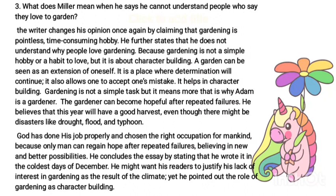Gardening is not a simple task but it means more — that is why Adam is a gardener. The gardener can become hopeful after repeated failures. He believes that this year will have a good harvest even though there might be disasters like drought and flood. God has done his job properly and chosen the right occupation for mankind, because only man can regain hope after repeated failures and believe in new and better possibilities. He concludes the essay by stating that he wrote it on the coldest December, wishing to justify his lack of interest in gardening as a result of climate. Yet he pointed out the role of gardening as character building.